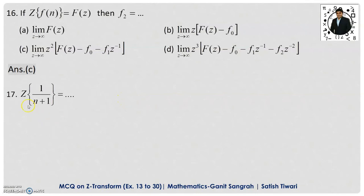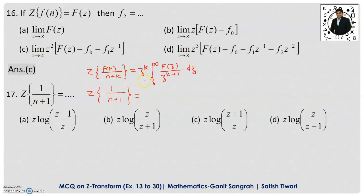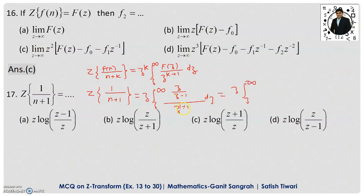Example 17: Z-transformation of 1/(n+1). The formula to apply is: Z-transform of f(n)/(n+k) = z^k · integral from z to ∞ of [F(z)/z^(k+1)] dz. Comparing with 1/(n+1), f(n) = 1 and k = 1. The Z-transform of 1 is z/(z−1). So we get z times integral from z to ∞ of [z/(z−1)] / z² dz, which simplifies to z times integral from z to ∞ of 1/[z(z−1)] dz.